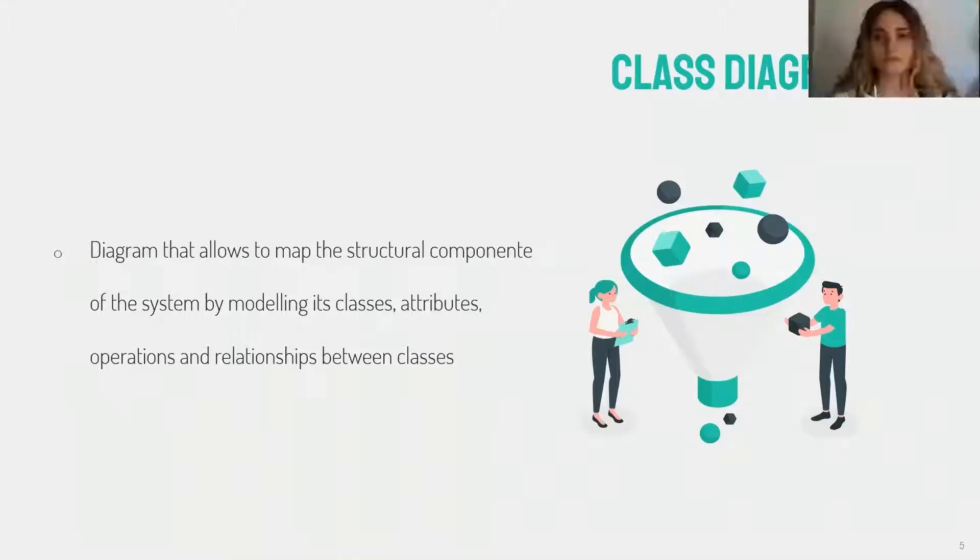A class diagram models the static structure of a system. It shows relationships between classes, objects, attributes and operations. A class diagram is used for modeling the system of an application and for translating the model into programming code.